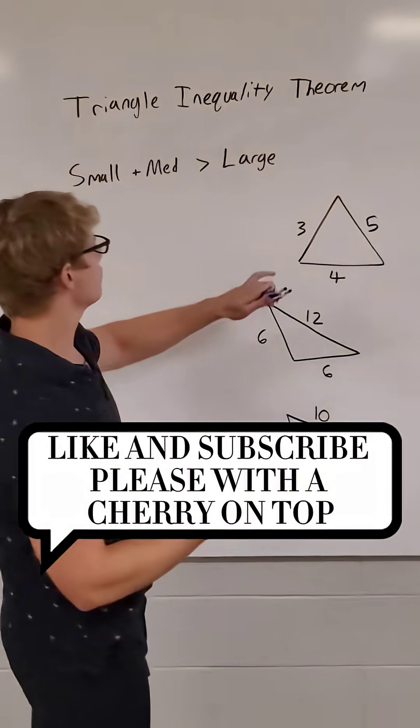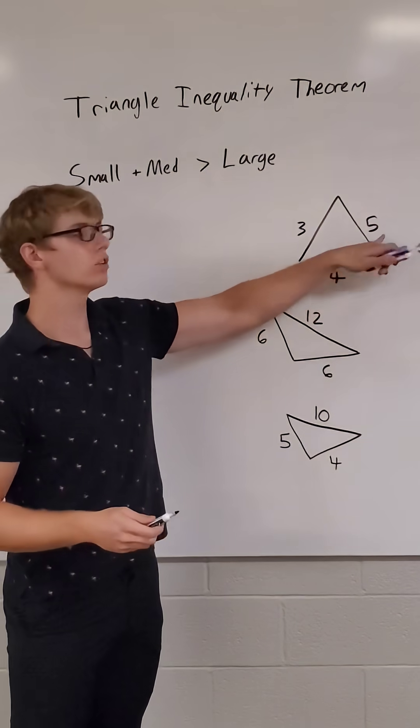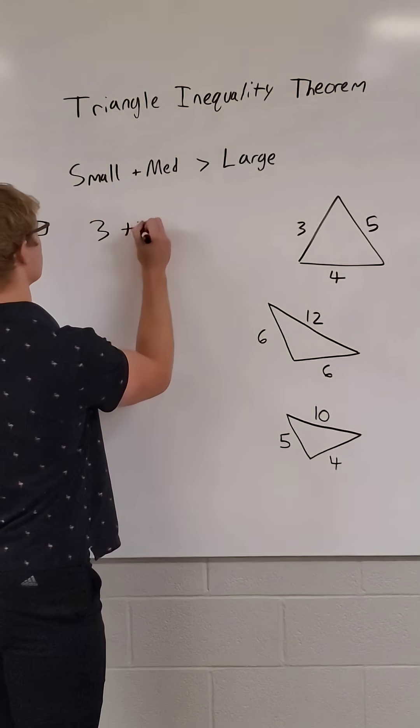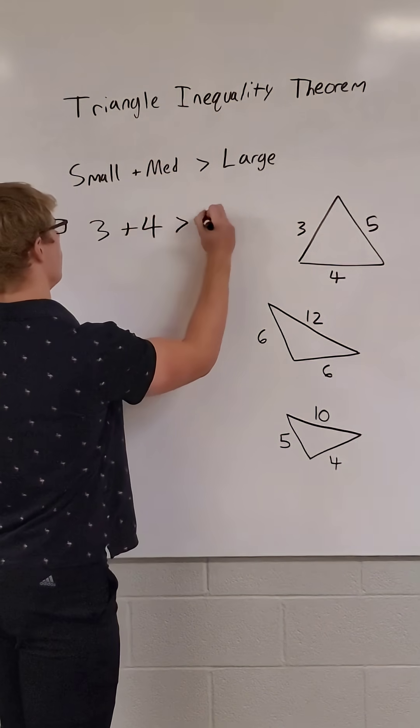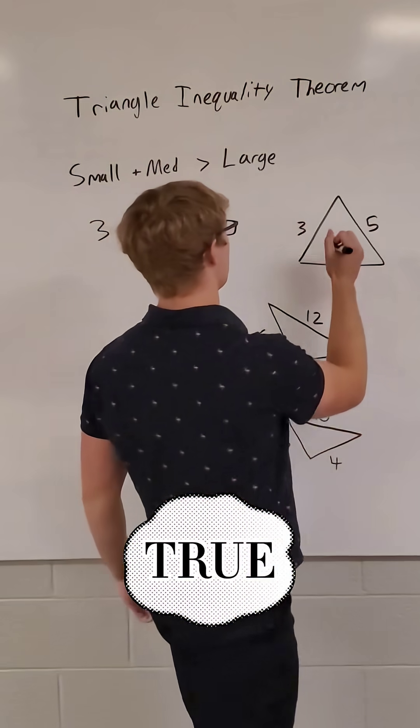Looking at this example up here, the smallest side is 3, the medium side is 4, and the largest side is 5. So we can say that 3 plus 4 is greater than 5. That is a true statement, so this would work as a triangle.